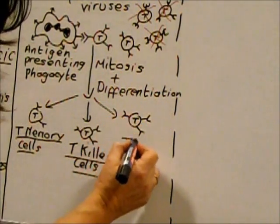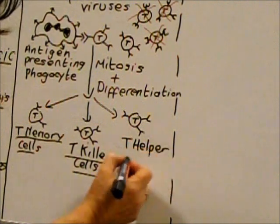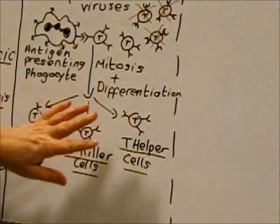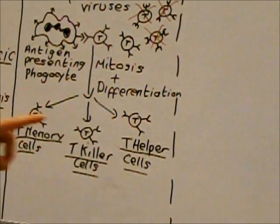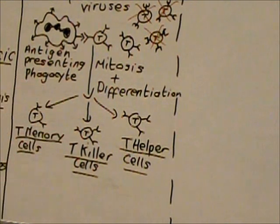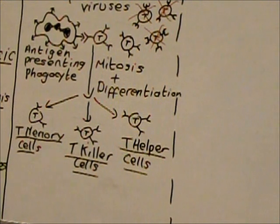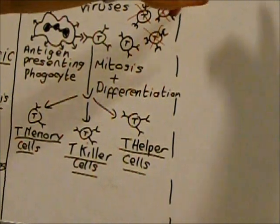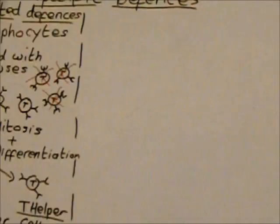The third type of T lymphocyte produced by differentiation is T helper cells. These help amplify the immune response in several ways: they release chemicals that attract phagocytes to the site of infection and stimulate phagocytosis, so more pathogens are ingested and destroyed. T helper cells can also signal to B lymphocytes, telling them to become activated and start dividing, setting off what's known as the humoral response.